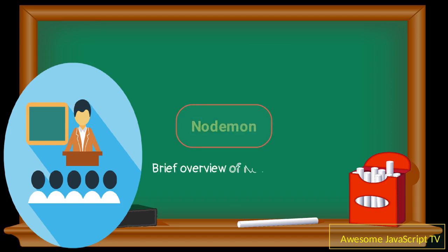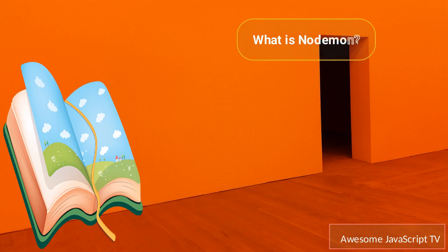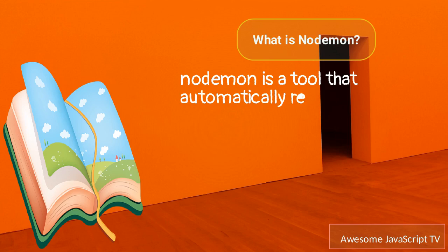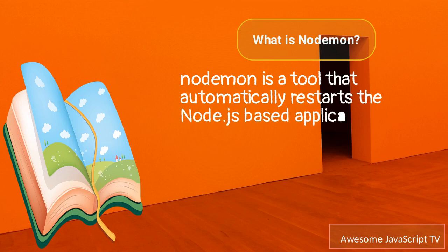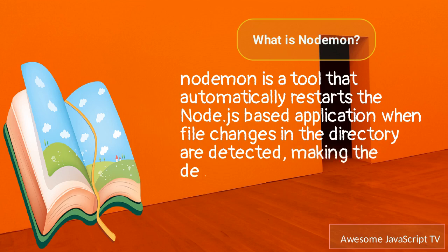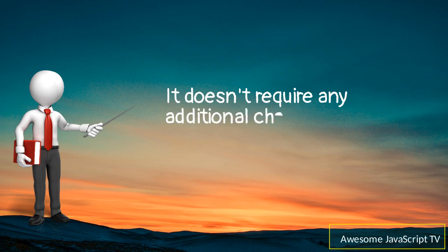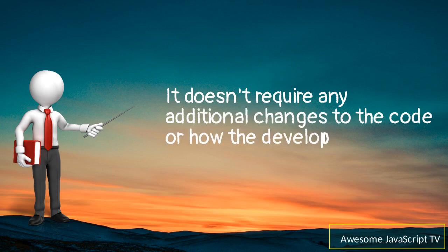Brief overview of NodeMond. NodeMond is a tool that automatically restarts the Node.js based application when file changes in the directory are detected, making the development process smoother. It doesn't require any additional changes to the code or how the development is carried out.